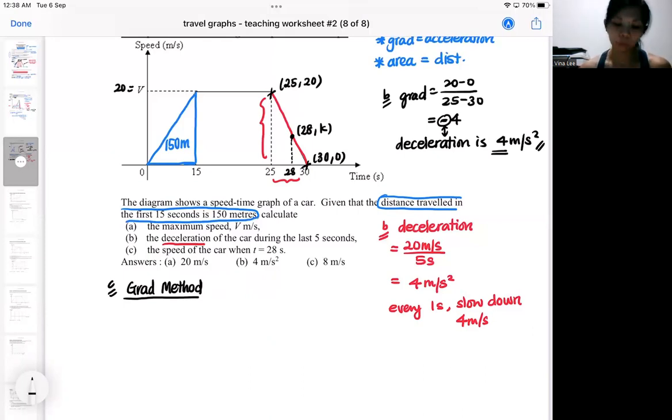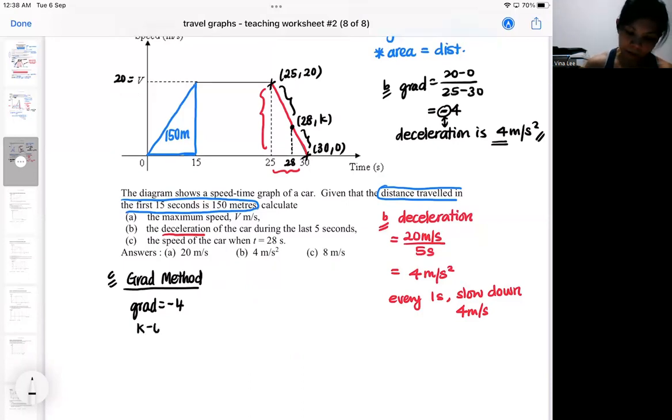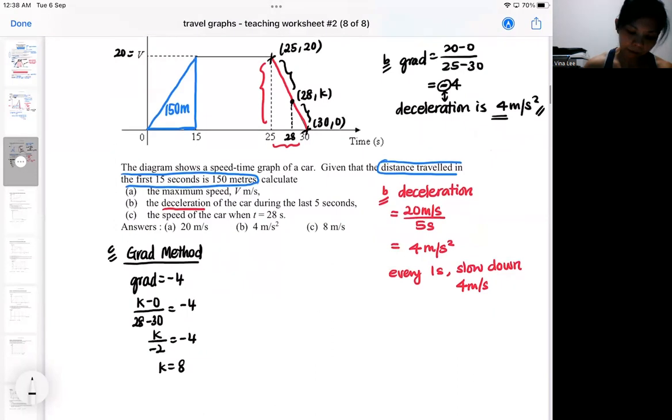I already know that the gradient will be minus 4. So I'm going to form either this gradient or I form either this gradient. It doesn't matter. You can form the smaller gradient. That means K minus 0 over 28 minus 30 will be minus 4. So K is 8. That means at T equal to 28, the speed is 8 meter per second. So I can do it by the gradient method.